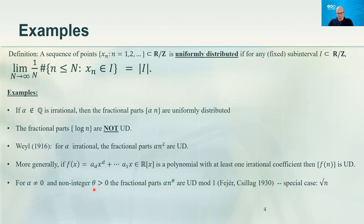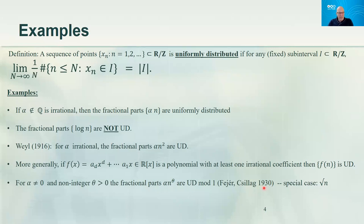Another particularly relevant example: instead of n squared, take n to the theta where theta is any number. If theta is an integer, this falls under Weyl's example. But you can take non-integer thetas — for instance, theta equals one half. The statement is that for any non-zero alpha and any non-integer theta, the sequence alpha times n to the theta is uniformly distributed mod 1. This is also classical material, covered in the book by Kuipers and Niederreiter.